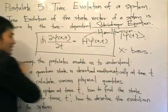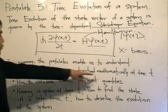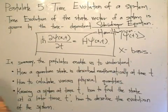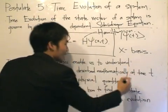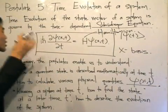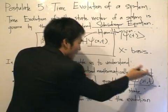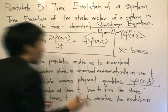In summary, the postulates enable us to understand three things. How a quantum system is described mathematically at time t. What are we going to use? We're going to use the wave function. This wave function is what we use to describe the quantum system. It's described mathematically at time t. It's the wave function on the x basis.